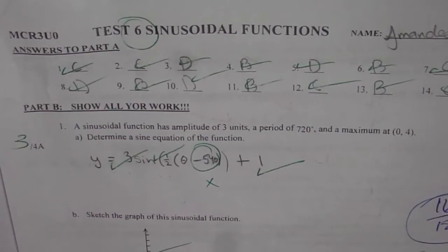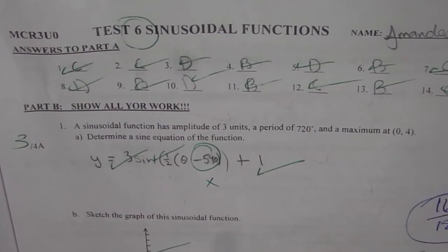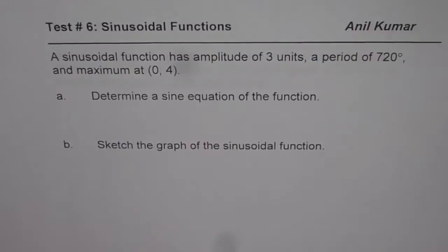I'm Anil Kumar sharing with you test paper of my student Amandeep. Let me first congratulate him for doing excellent job in his test paper. Here is the very first question which we are going to discuss. A sinusoidal function has amplitude of 3 units, a period of 720 degrees and maximum at (0,4). Determine a sine equation of the function, sketch the graph of the sinusoidal function.